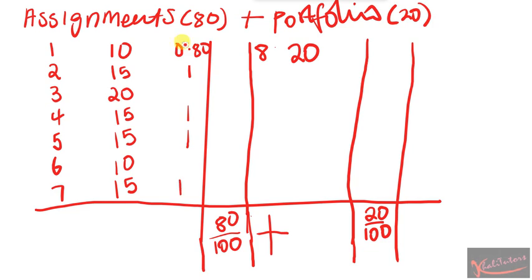Let's say you got 0 — maybe you did not submit Assignment 3, then you're going to have 0 here. You did not submit Assignment 6, you're going to have 0 here. To get your final mark, you're just going to multiply: 10 with this one, 15 with this one. You're just multiplying.